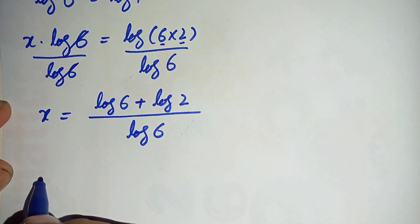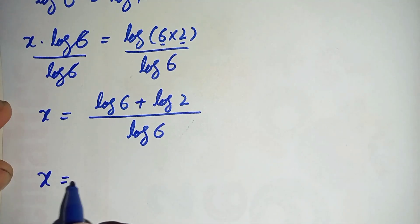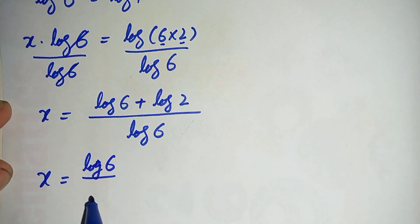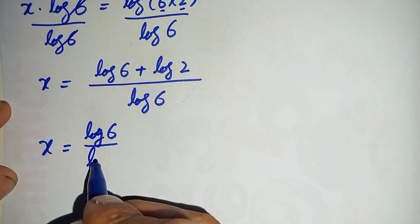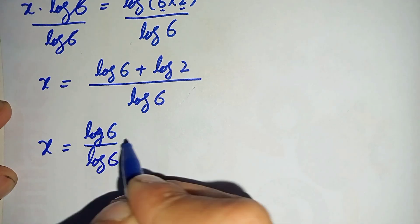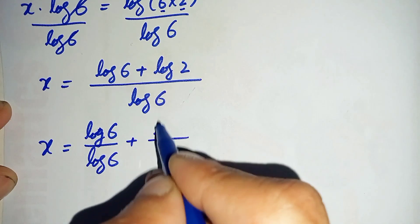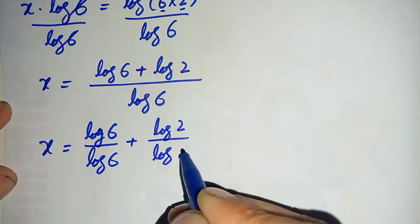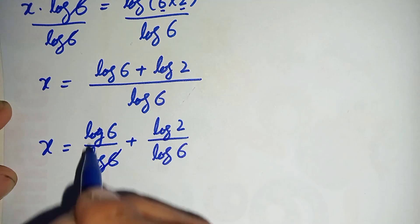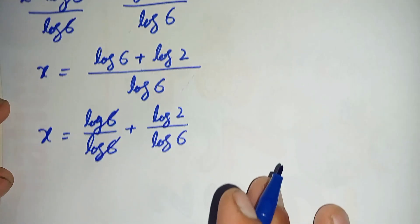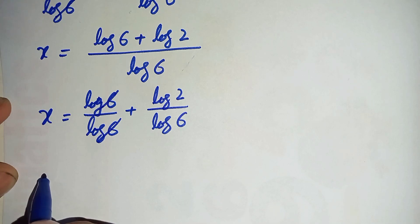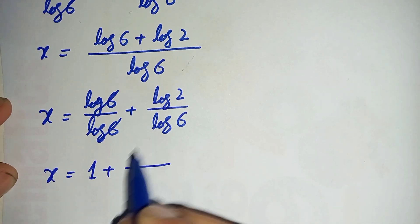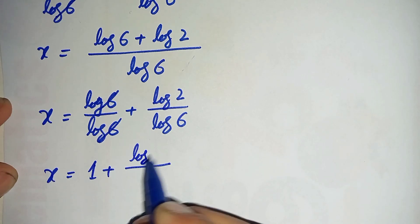On the right hand side, x equals log of 6 divided by log of 6 plus log of 2 divided by log of 6. The log of 6 over log of 6 cancels to give 1, so this becomes x is equal to 1 plus log of 2 divided by log of 6.